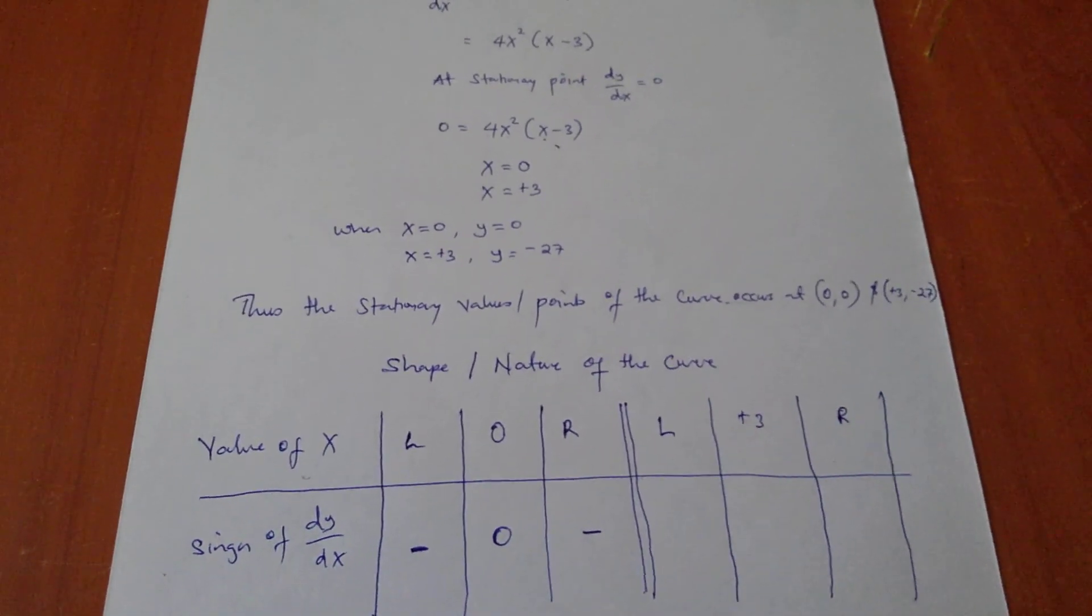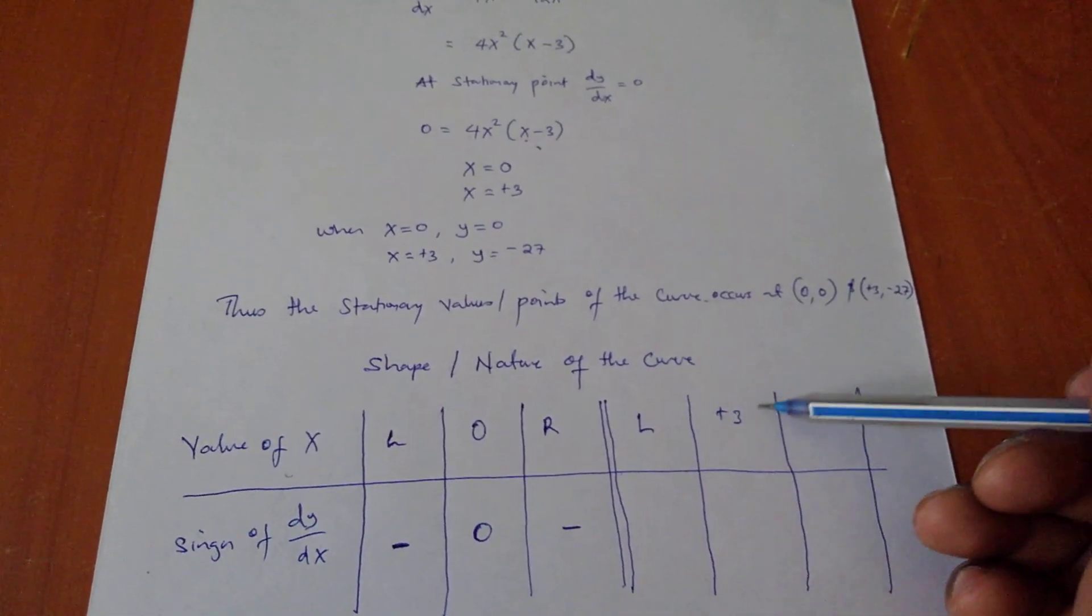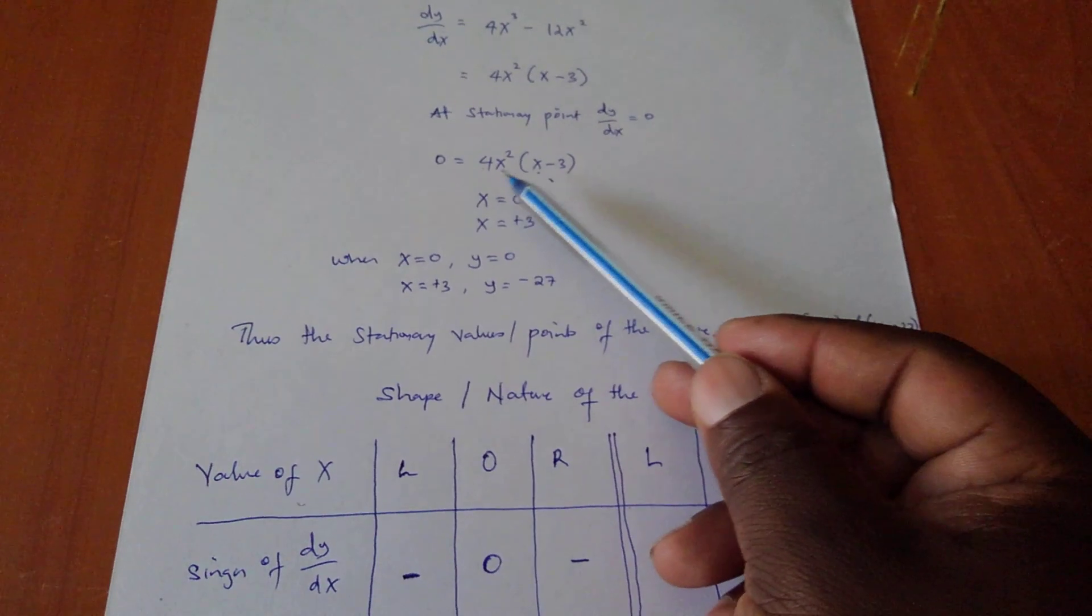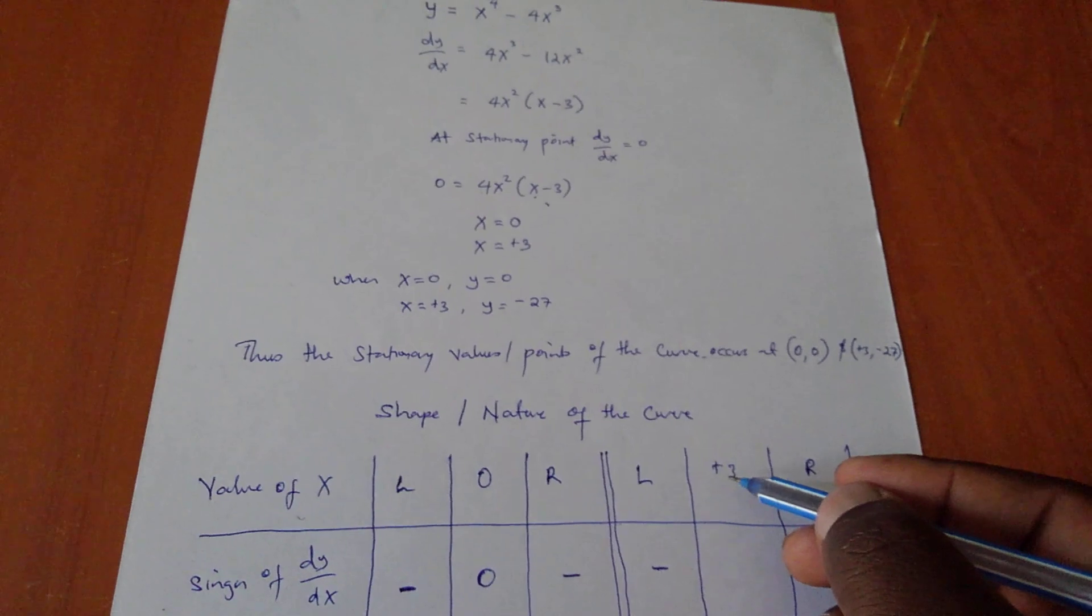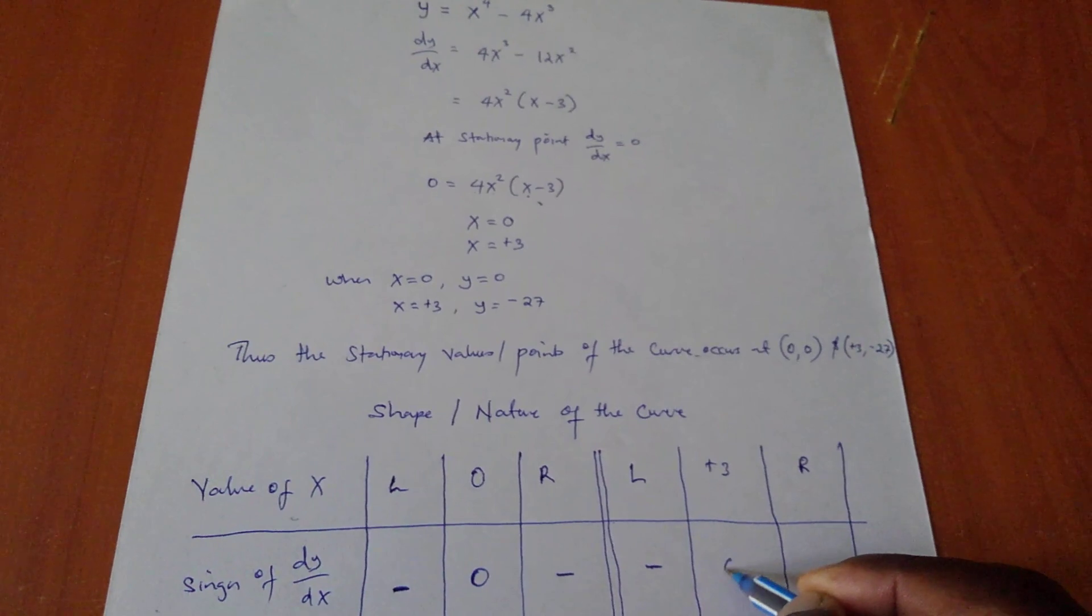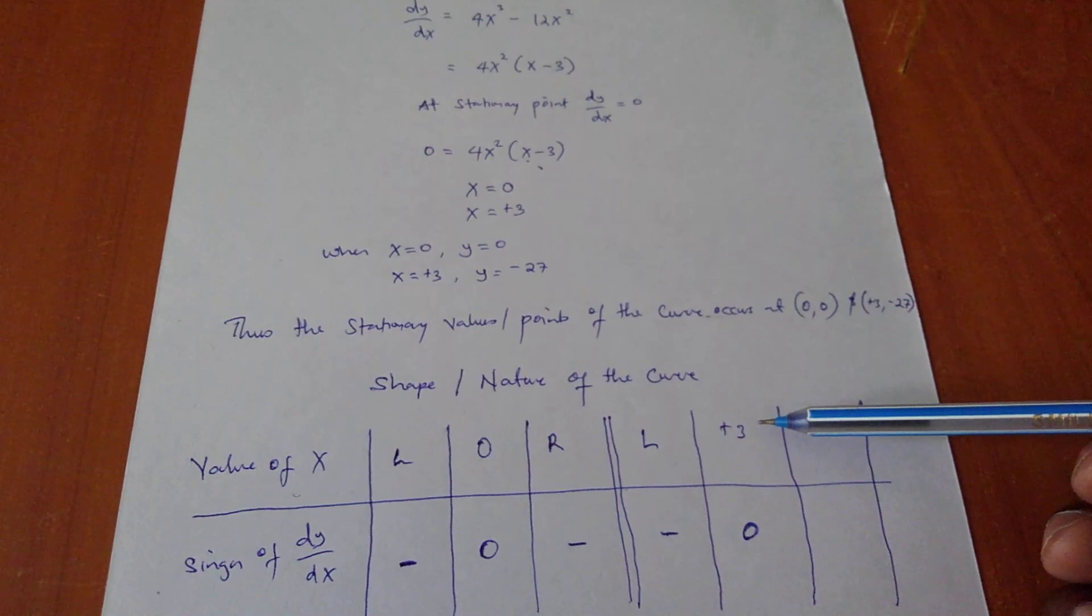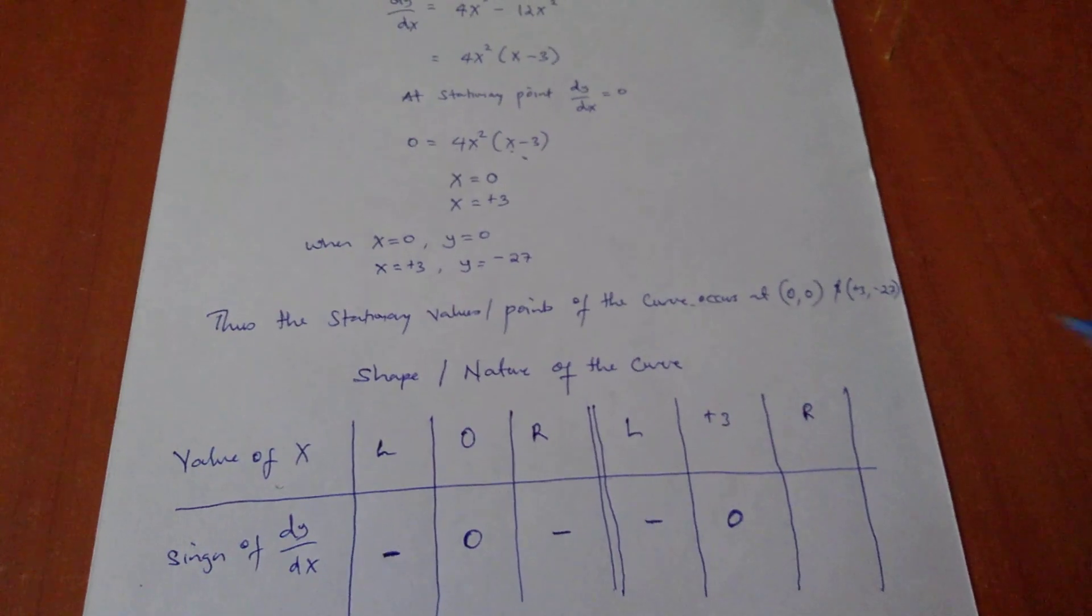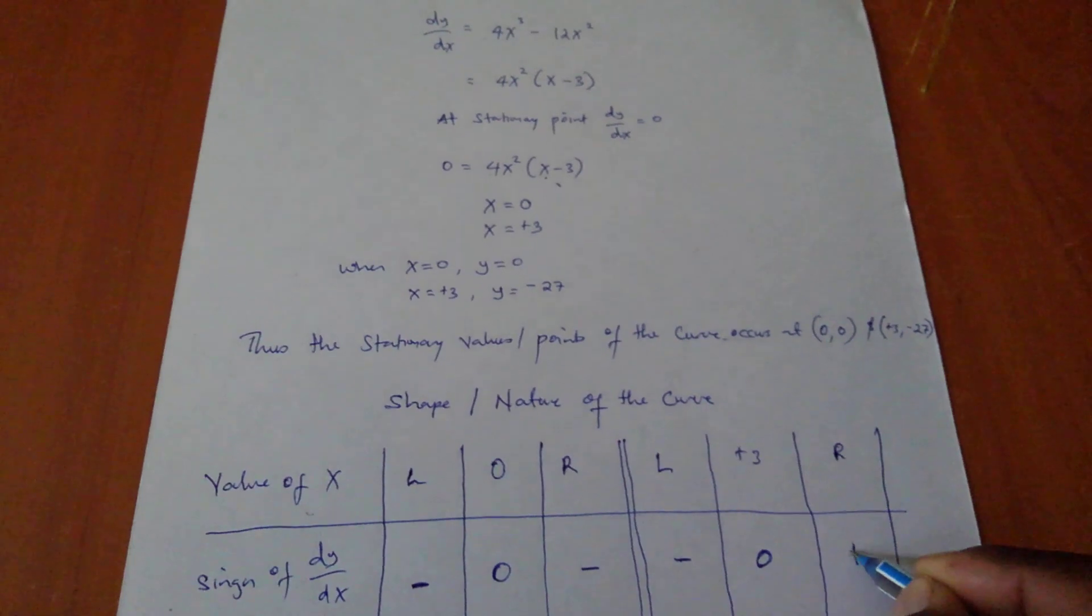So, going to positive 3, if I try to go on the left-hand side of positive 3, let me take positive 2. Try to put a positive 2 in here, I'll still get a negative number or negative value. If I try to put 3 itself from this equation, I'll still get a 0. If I try to get any number on the right-hand side of positive 3, let me take 4, the immediate one, if I put here 4, I'll get a positive value.